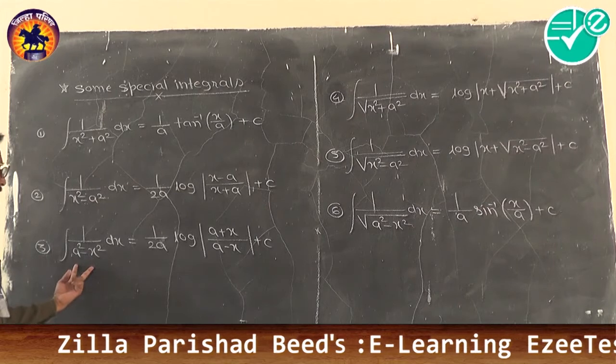Sixth problem: integration of 1/√(9 − 25x²) dx. Rewrite as 1/√(3² − (5x)²) dx. Since the coefficient of x is 5, write 1/5 outside. This problem is with square root and the coefficient of x² is negative, so the answer is in the sine inverse form: 1/a · sin⁻¹(variable/constant). Here a = 3, variable = 5x. Final answer: (1/15) · sin⁻¹(5x/3) + c.